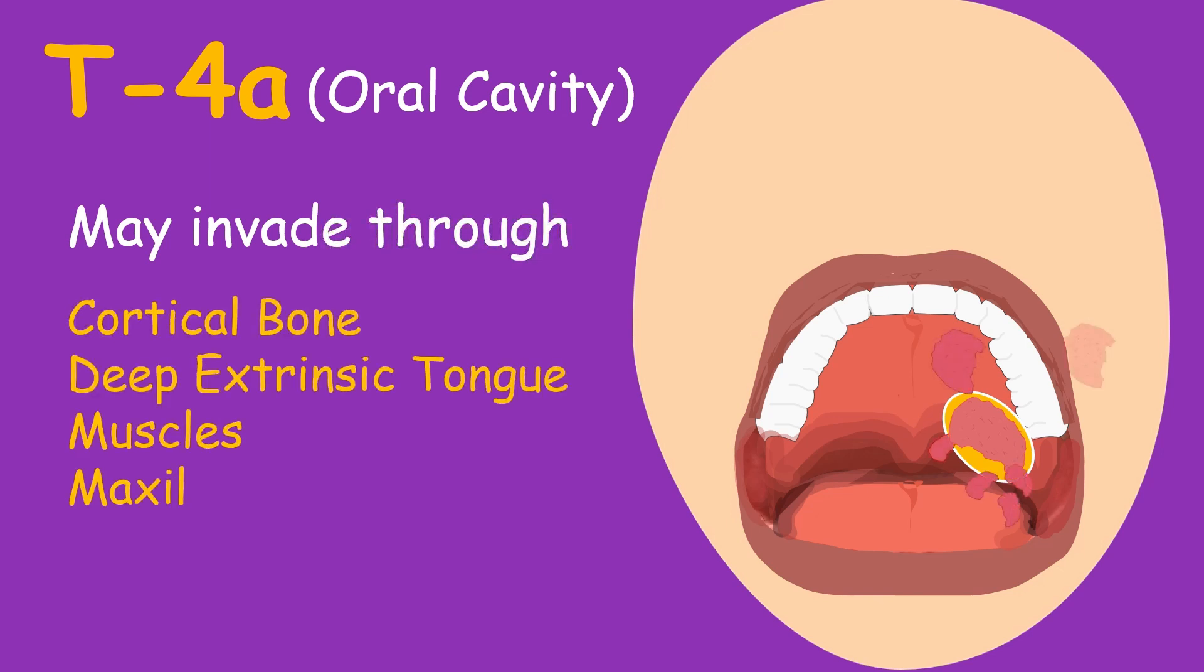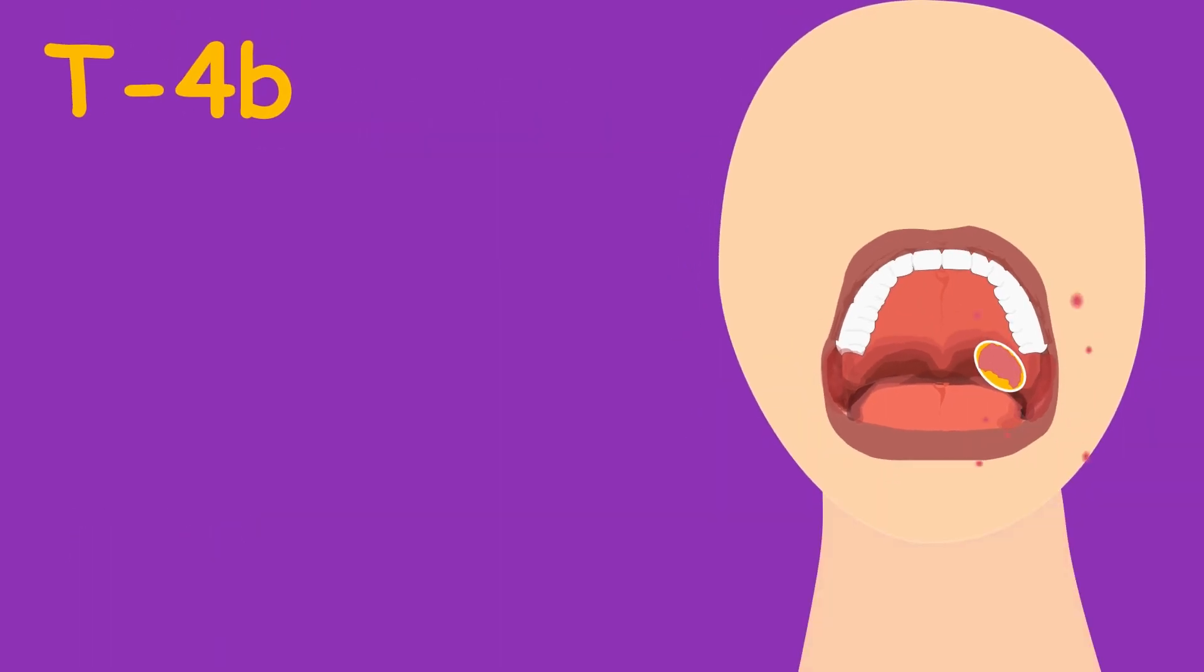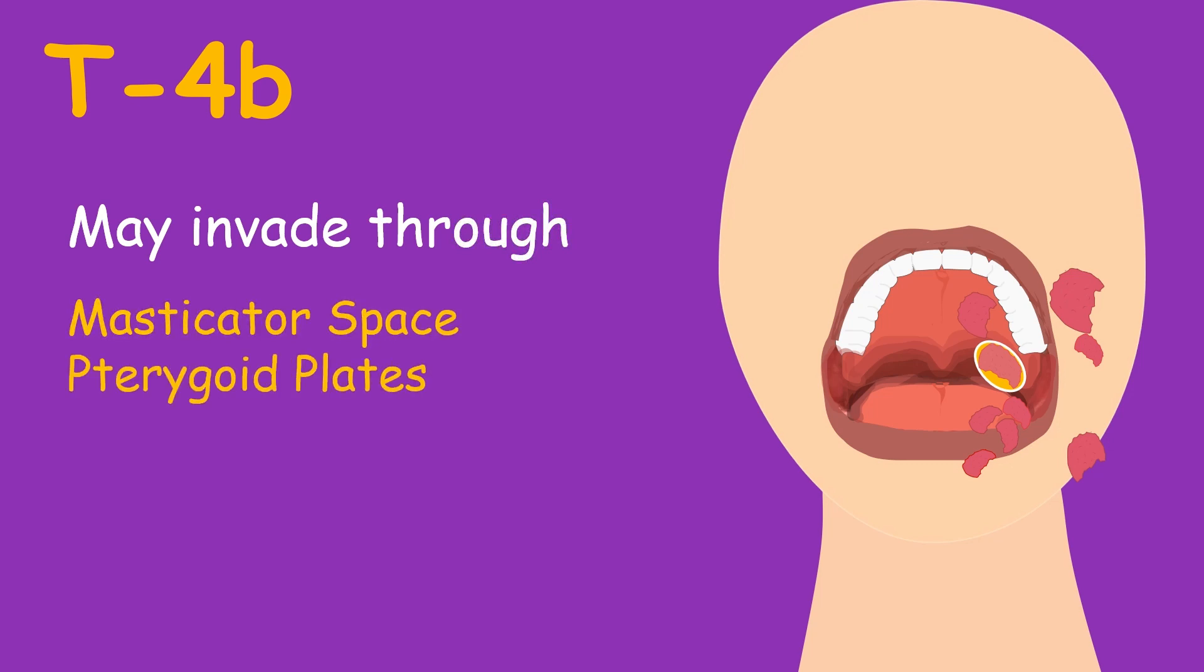deep extrinsic tongue muscles, maxillary sinus, and may spread to the skin of face. T4B is non-resectable, where the tumor has spread and invaded some important structures like the masticator space, pterygoid plates, or the base of skull and may encase the internal carotid artery.